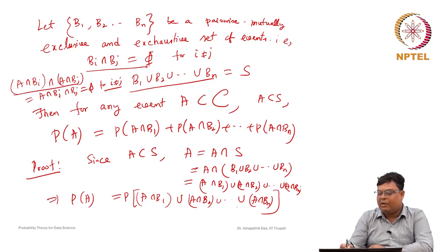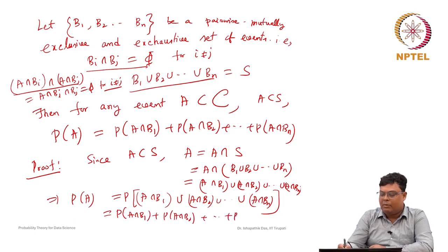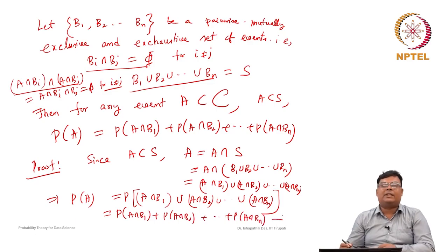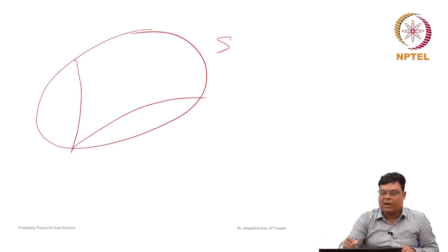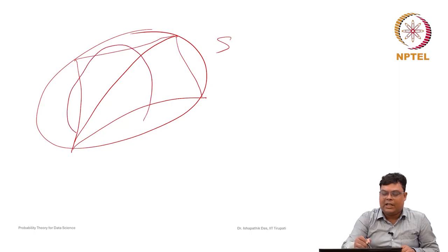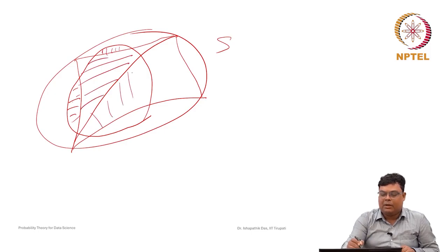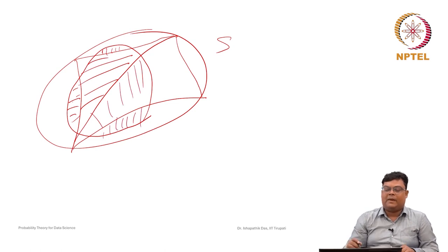Using Theorem 1.5, because they are pairwise mutually exclusive events, probability of A equals probability of A intersection B1 plus probability of A intersection B2 plus probability of A intersection Bn. This result we will discuss again whenever we discuss how to find the total probability of an event. If you have this kind of partition, we can represent it graphically: any event A intersects with each partition block B1, B2, B3, B4, and so on.